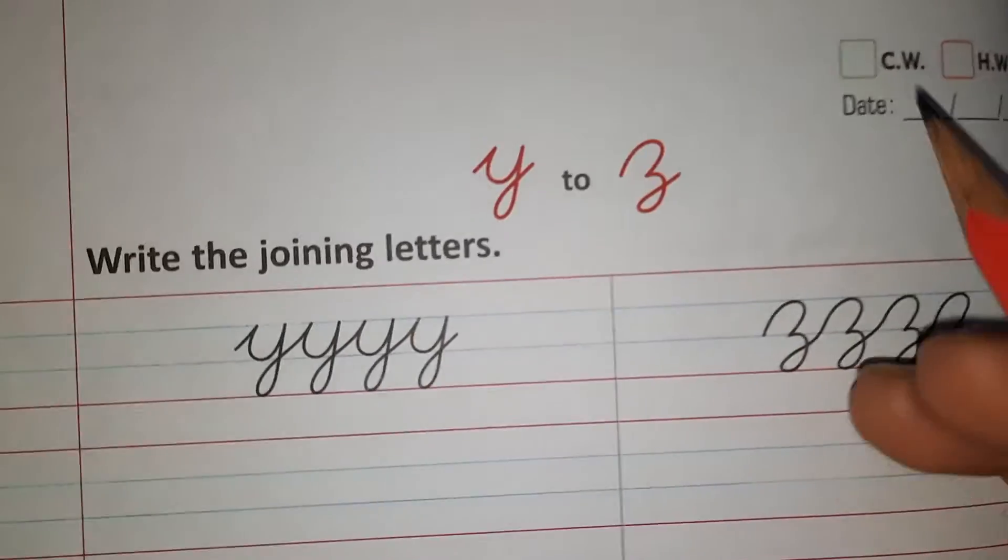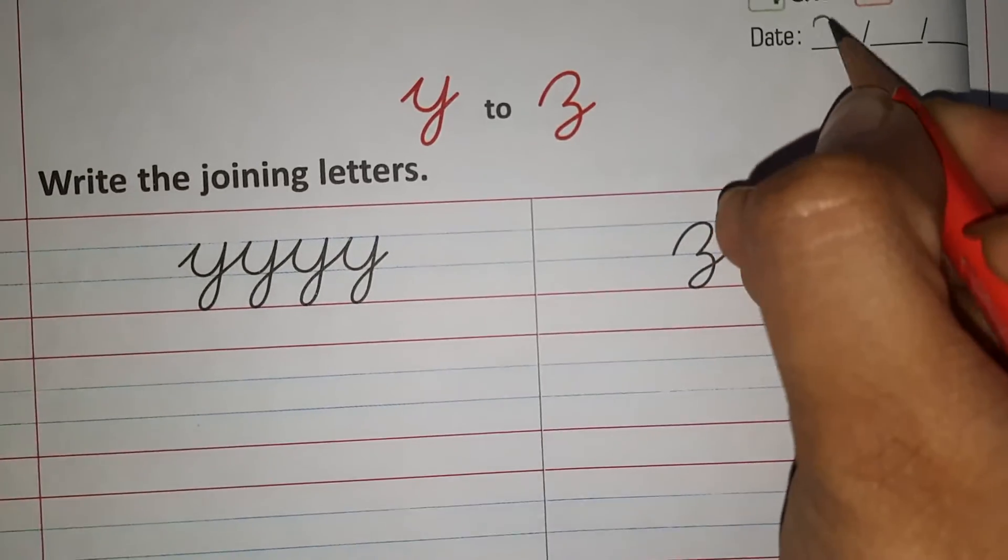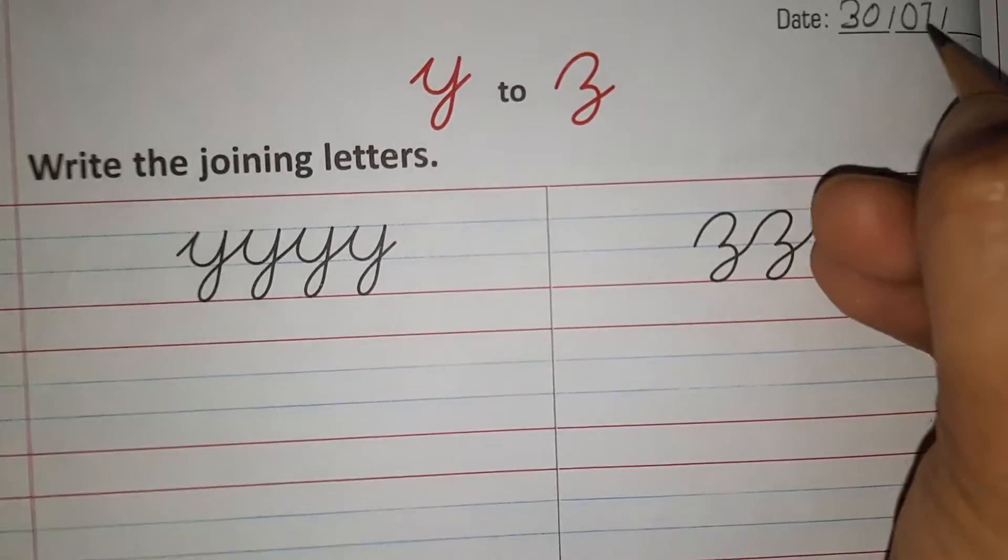On page number 42, you are going to tick on classwork. Then write today's date over here which is 30th July 2021.